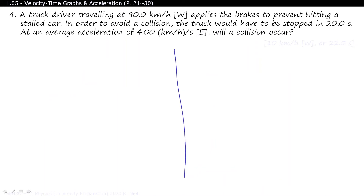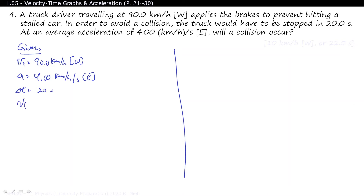There are two ways of solving this problem. The first method is to check whether VF goes to zero. Given VI = 90 km/h west, acceleration = 4.00 km/h per second east, and ΔT = 20 seconds, the question is whether VF will be less than or equal to zero km/h. Because the acceleration could cause you to slow down, stop, and accelerate in the opposite direction, VF could be less than zero. If it's greater than zero, the car is still physically moving — and that's what we're checking.